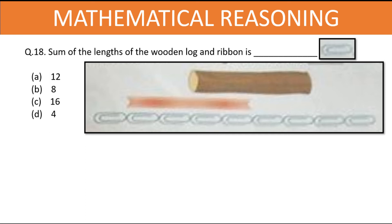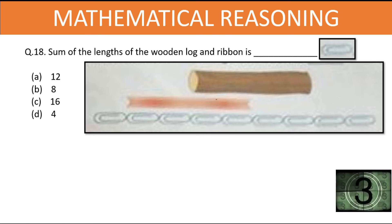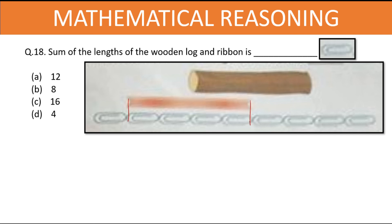Find the sum of the lengths of the wooden log and ribbon in U pins. The ribbon measures 4 U pins and the length of the log also measures 4 U pins. So the sum is 4 plus 4, which equals 8 U pins. Our answer is option B.